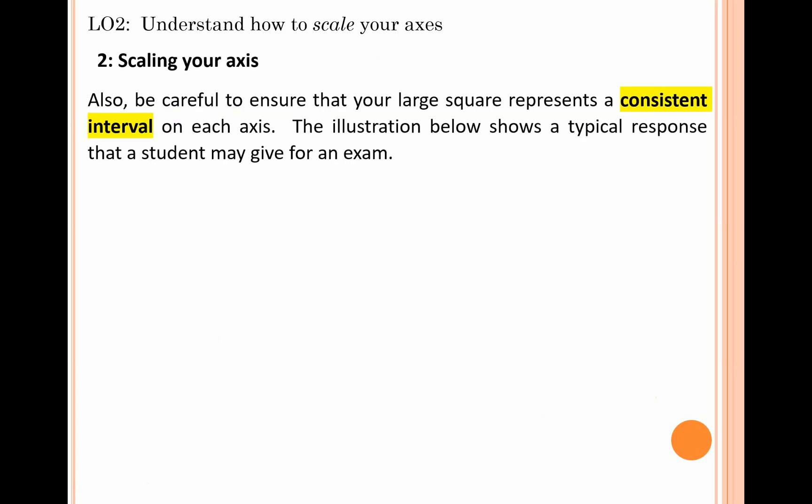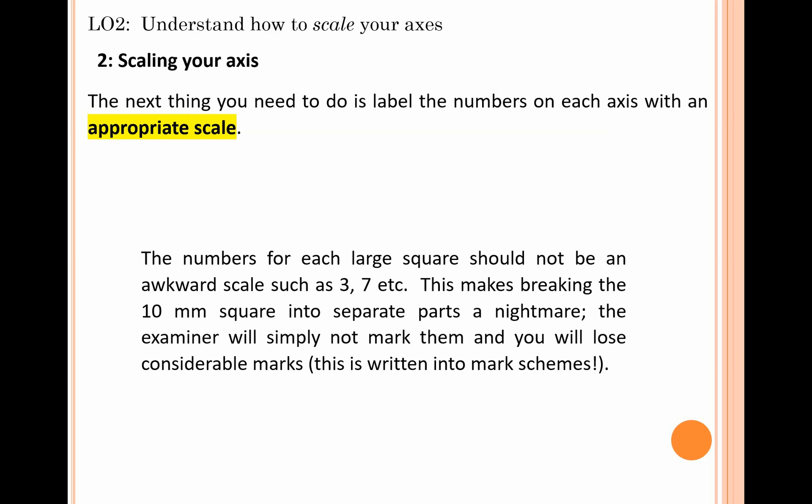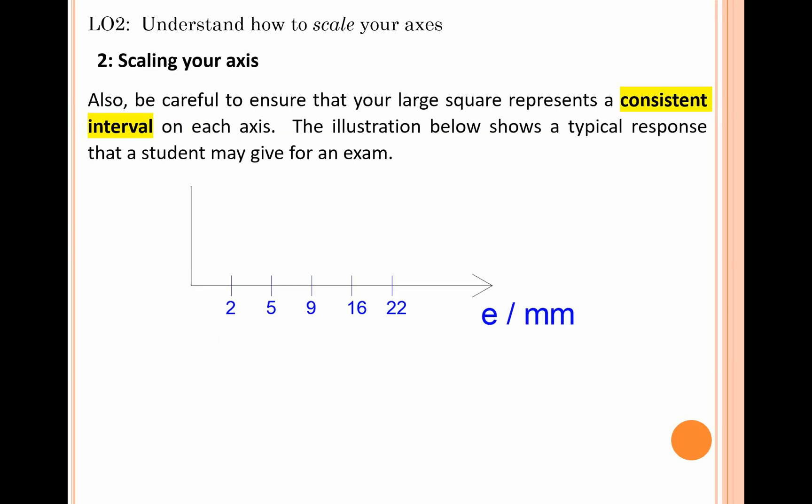You also need to make sure that you choose a consistent interval across each axis. You might have satisfied this one—maybe you've used 2, or maybe 10. For instance, 10 wee small squares built into one big square, and each tiny square represents one—it's perfect, makes it very easy. But you need to also make sure that if you're using a certain interval up to the first big square, you need to keep that same interval throughout. Here's a typical response you might see from some students.